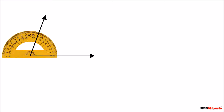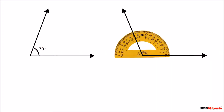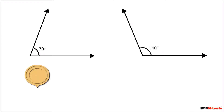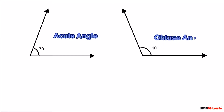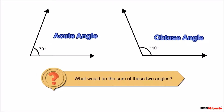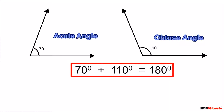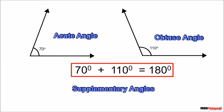Let's draw two angles that measure 70 degrees and 110 degrees. The angle of 70 degrees represents an acute angle and the angle of 110 degrees represents an obtuse angle. The sum of the given angles is 180 degrees. If the sum of the measure of two angles is 180 degrees, then the angles are called supplementary angles.